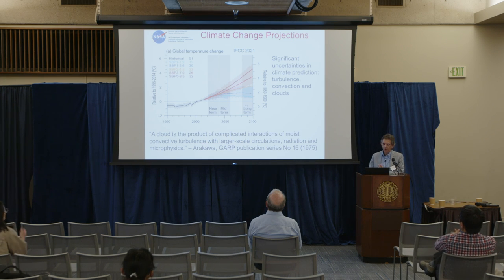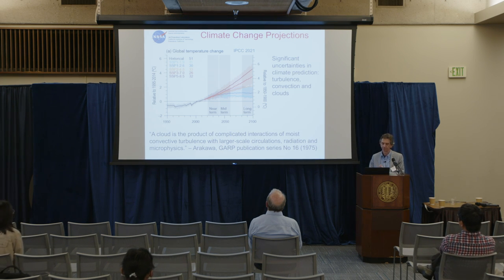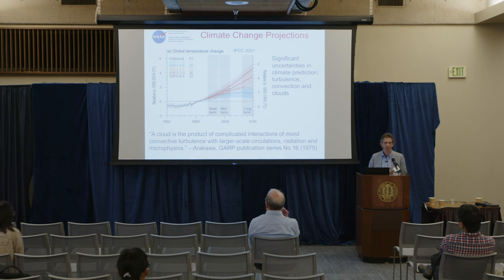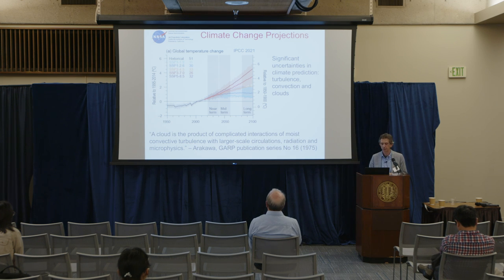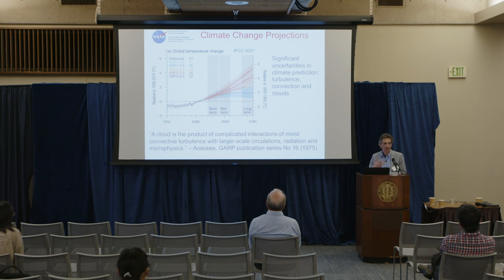I found a nice quote from Arakawa about the fact that when you think about clouds, you have to think about all of these different processes — that the cloud is really a product of complicated interactions of moist convective turbulence with larger scale circulations, with radiation and microphysics. That's well accepted among this group of people and many others.